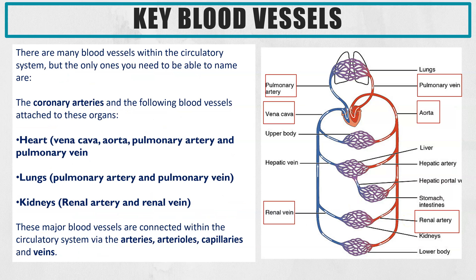The next thing you need to know are the key blood vessels. For AQA, you only need to know the blood vessels listed here. Most of these are covered in more detail in other videos — for example, the coronary arteries and the blood vessels connected to the heart and lungs are in the video on the heart, and the blood vessels related to kidneys and the nephron are linked at the end.